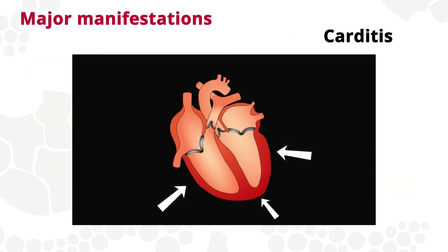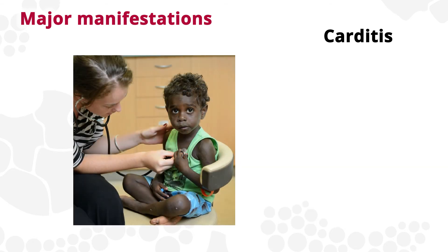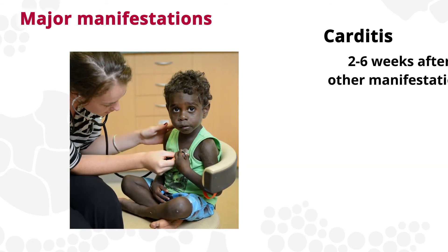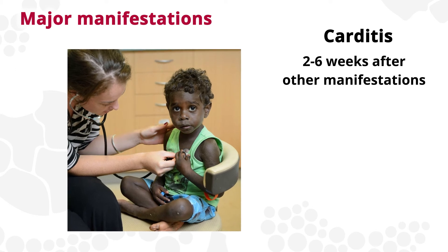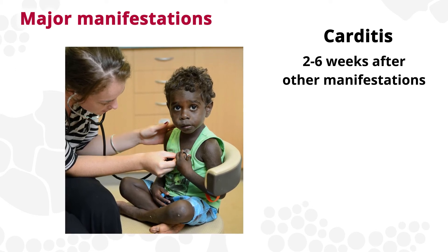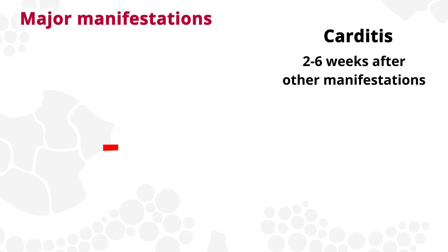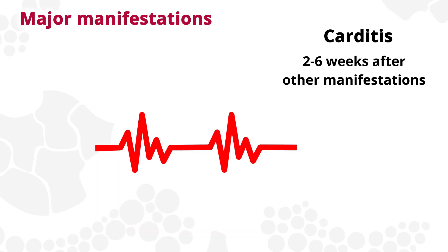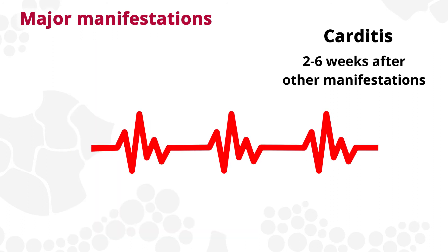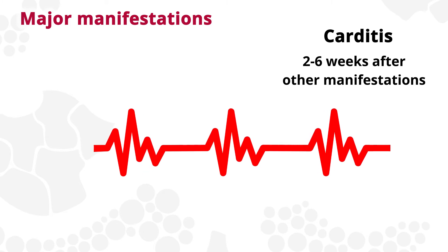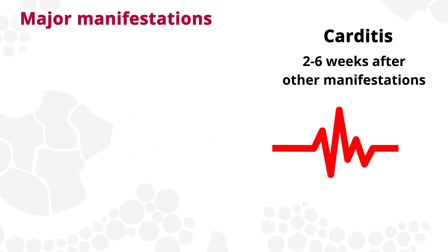Rheumatic carditis refers to the inflammation of valvular endocardium. It is often asymptomatic. It can occur up to two to six weeks after other manifestations of ARF, so the correlation with acute rheumatic fever can be missed. It is important to perform a 12-lead electrocardiogram (ECG) and organise an echocardiogram if ARF is suspected.